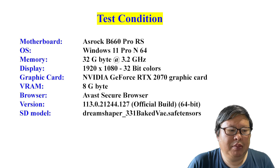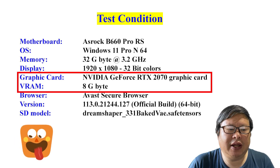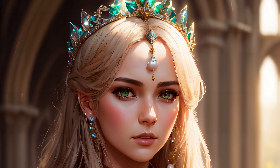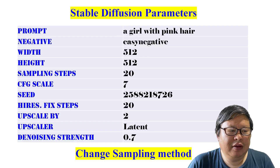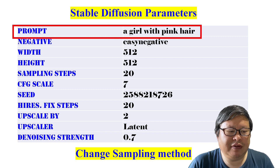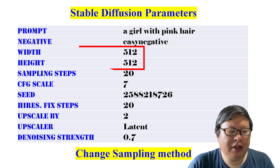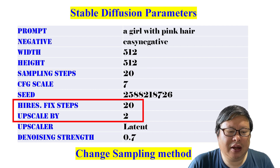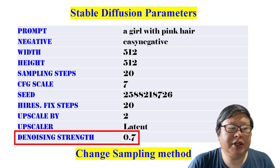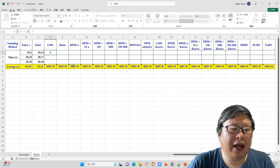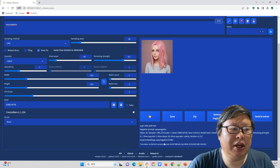Here are the test conditions. My computer hardware is not advanced, particularly my relatively old graphics card. I am using the DreamShaper model, which is one of my favorites for generating highly realistic images. For the parameters, I am using a simple positive prompt featuring a girl with pink hair, along with EasyNegative as the negative prompt. The resolution is set at 512x512, with high-resolution fix upscale by 2 over 20 steps. The denoising strength is set to 0.7. I run each image separately three times to eliminate uncertainty.